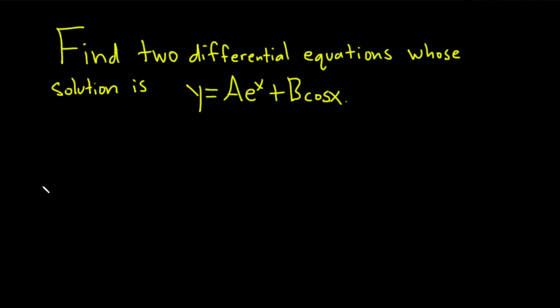Hello, in this problem we're going to find two different differential equations whose solution is given by y equals A times e to the x plus B times cosine x.